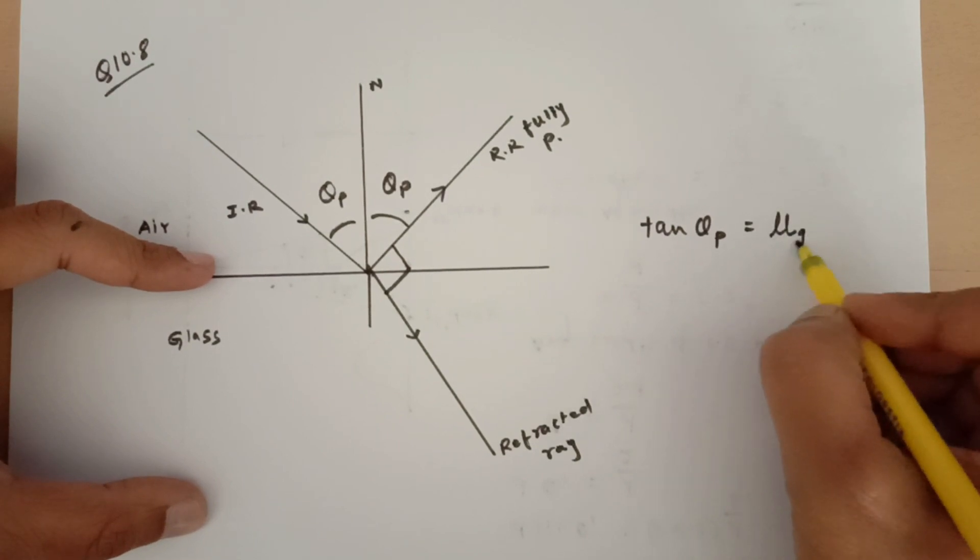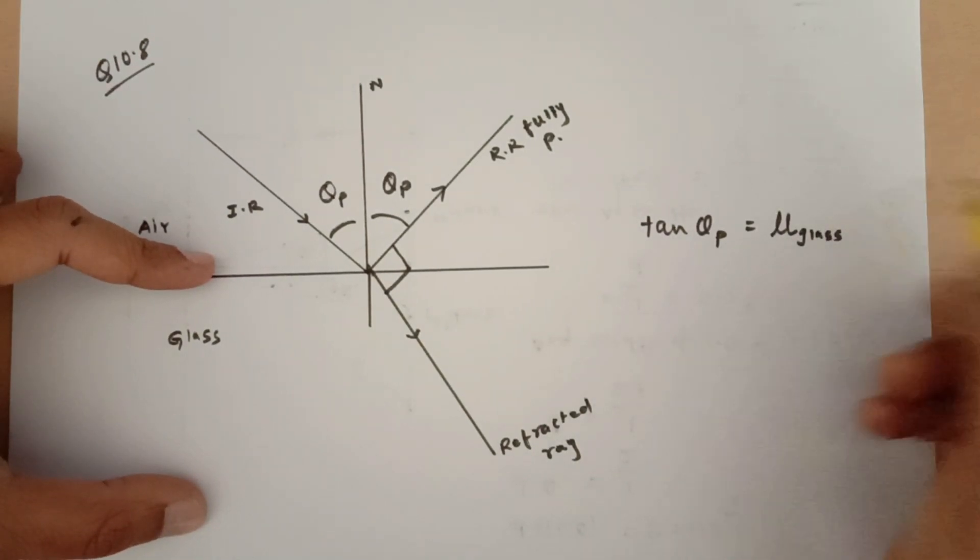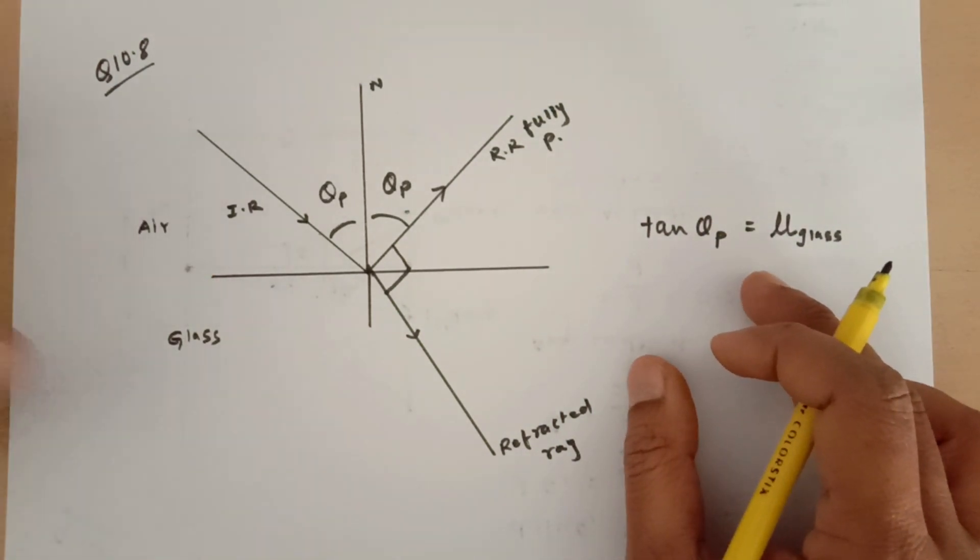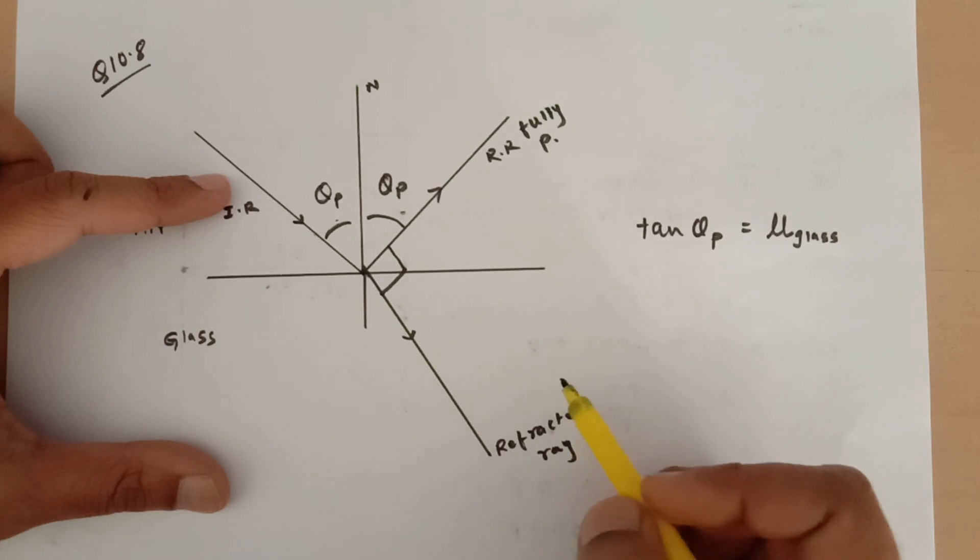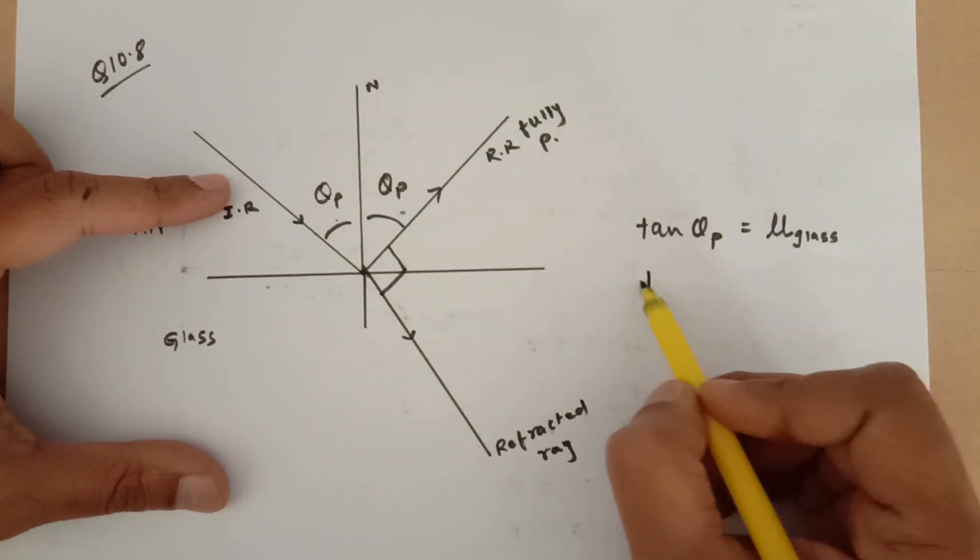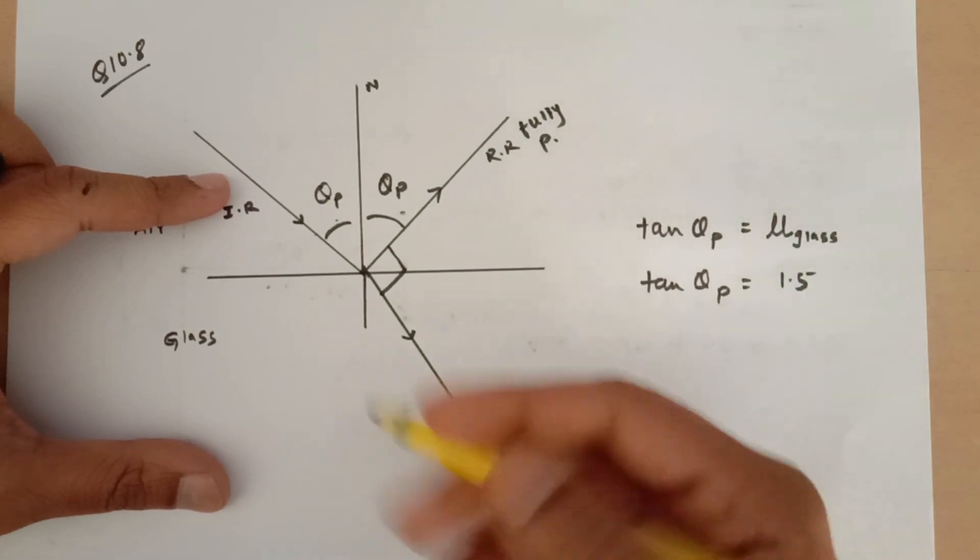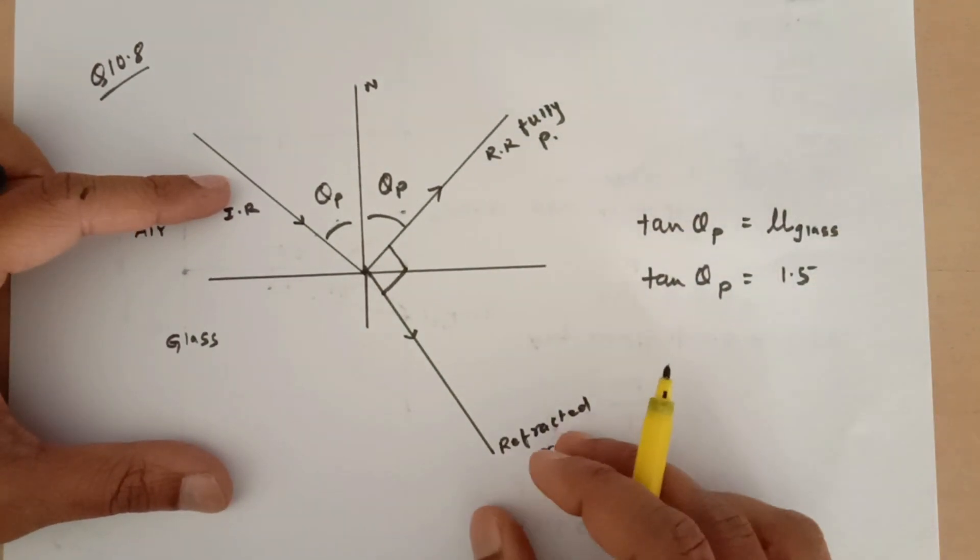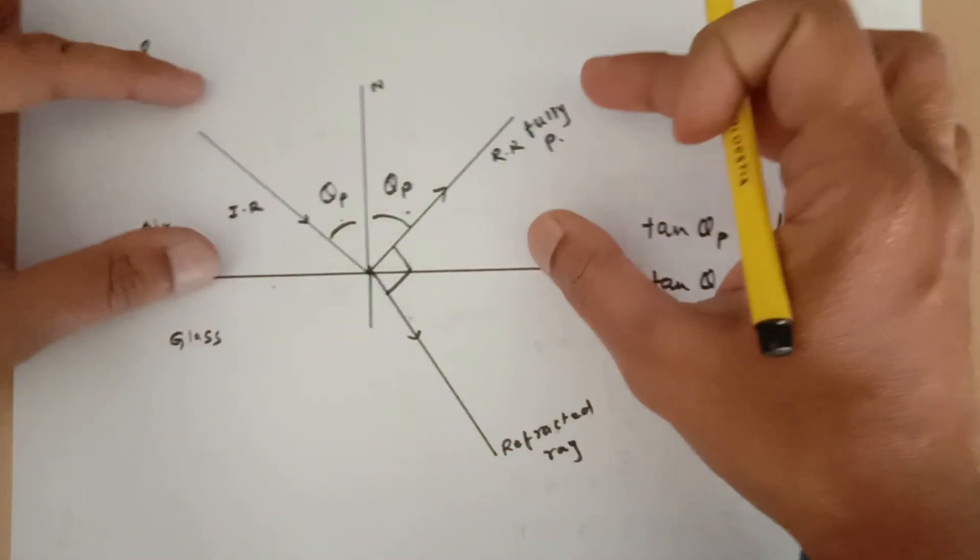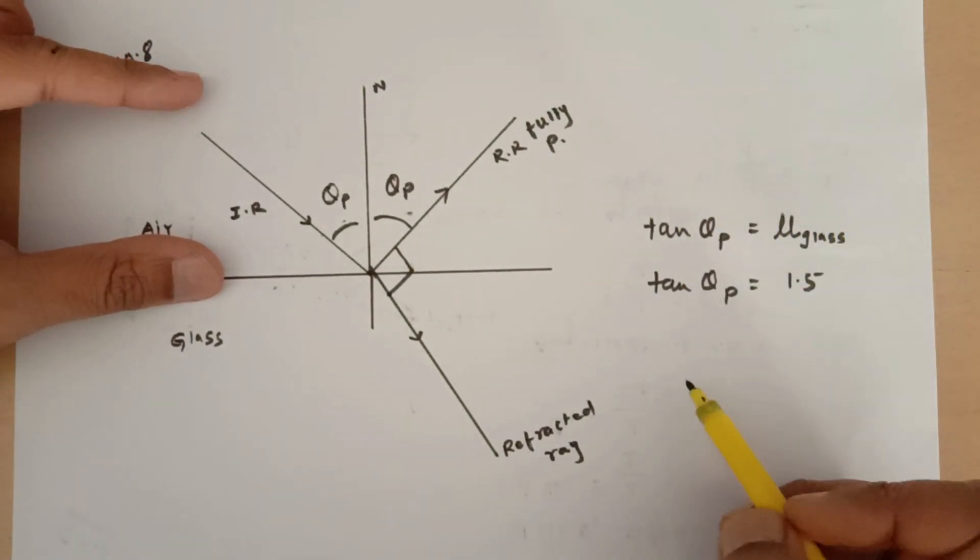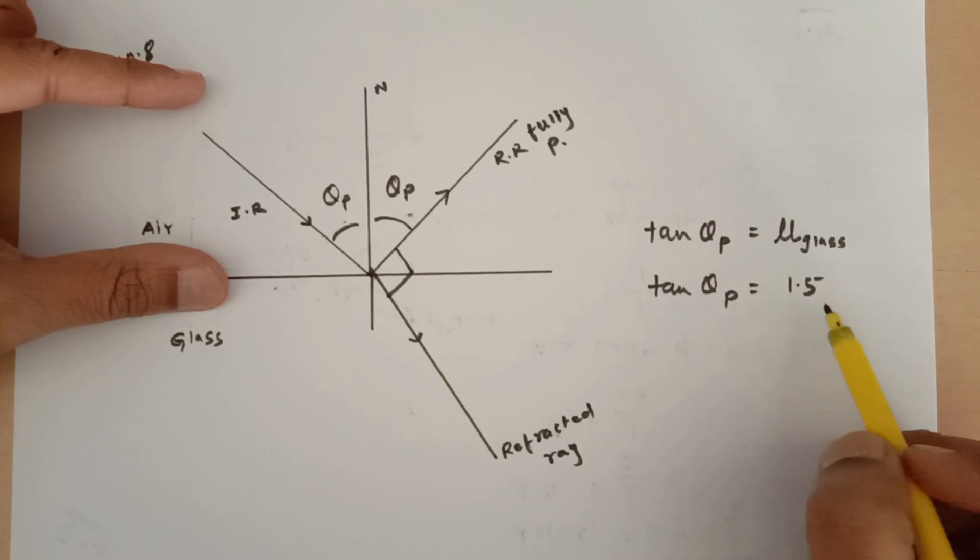This is Brewster's law. Now we are supposed to find out this theta p for air-glass interface. So tan of theta p is equal to refractive index of glass with respect to air, which is 1.5. Had it been water, then you will have to take refractive index of glass with respect to water. In such case, I will have to divide this by the refractive index of water, which is 1.33.